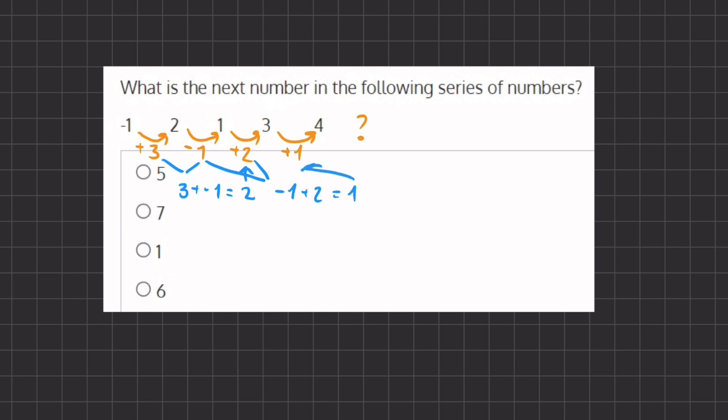So that means that if we take this 2 and this 1 and we add them together to get 3, if our pattern continues, we should be adding 3.